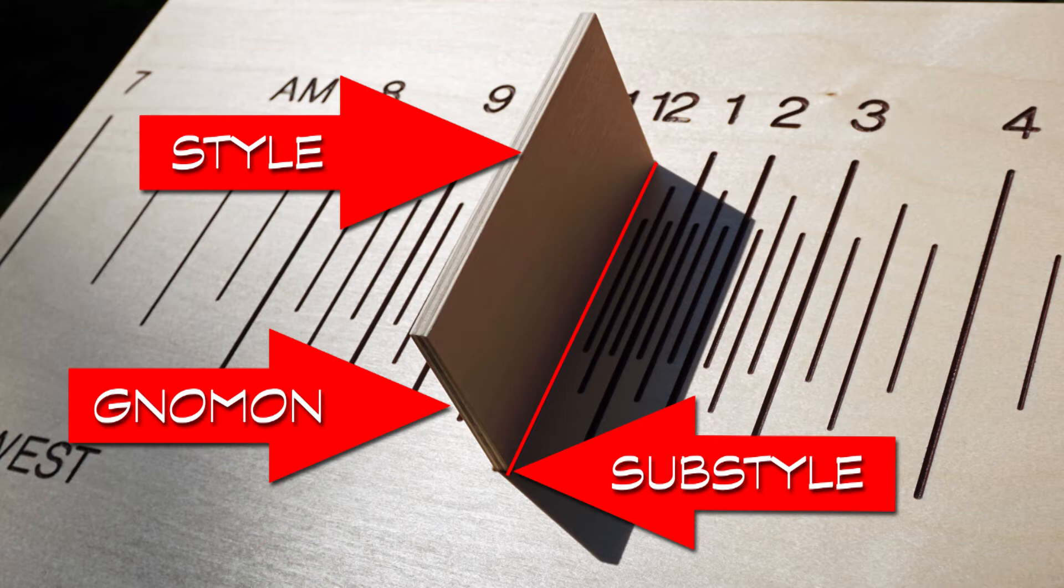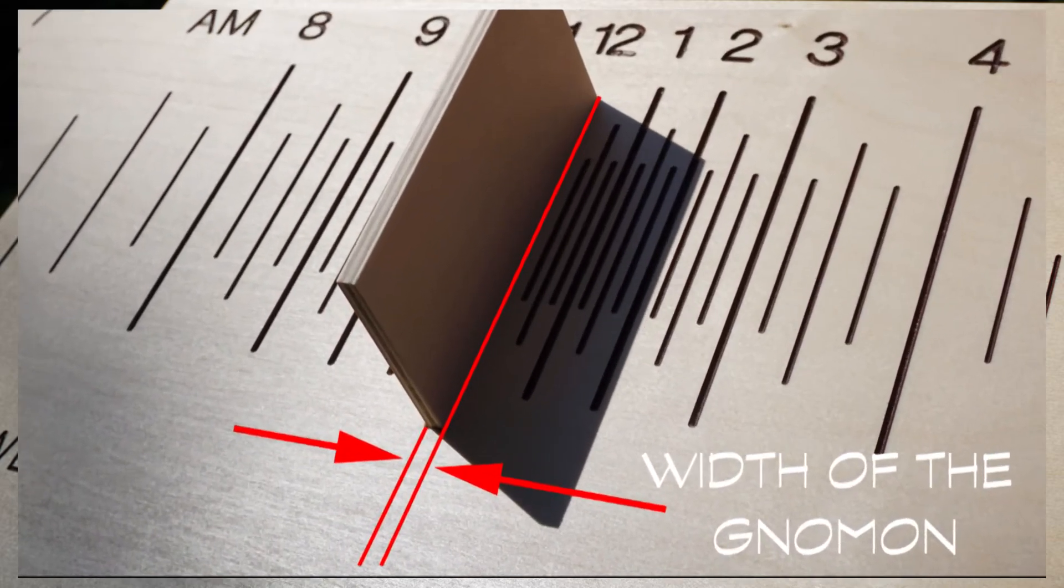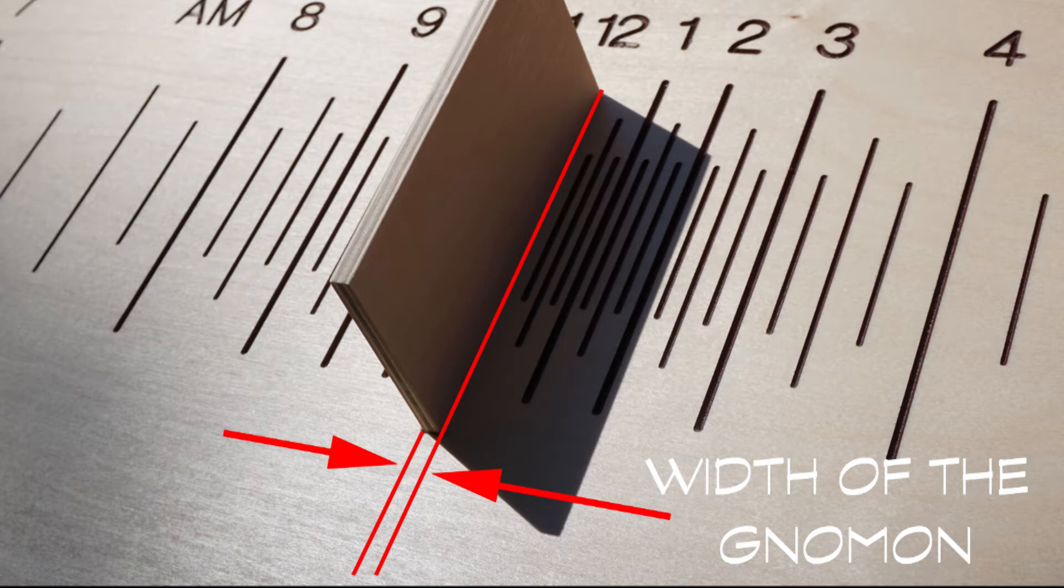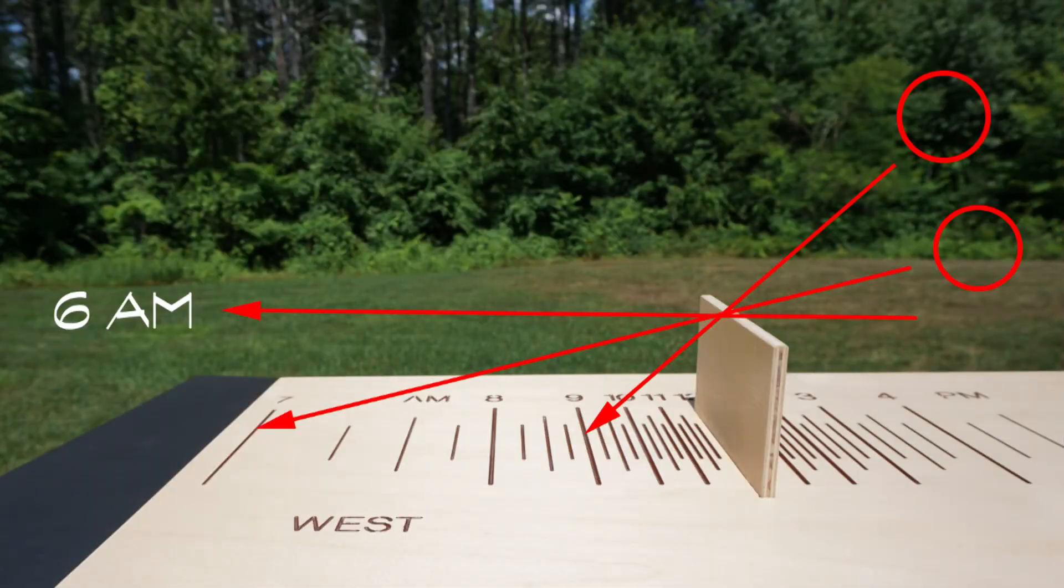An important design consideration for all dials is to consider how thick the gnomon is. One way to visualize this is to think of the noon line being as wide as the gnomon. In effect, that means there are two styles casting a shadow east or west of that noon line. We can see in this photo overlay how the sun's shadow line is casting off the left or west style of the gnomon.